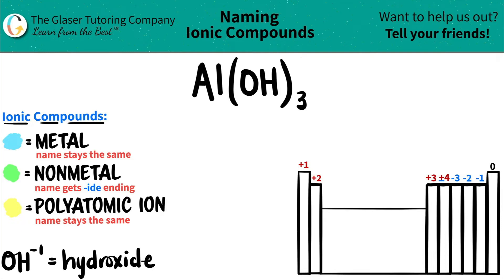Today we are going to be naming the ionic compound Al(OH)3. Now here's a trick guys. If you see that your compound has three or more different elements in it, you know you're dealing with at least one polyatomic ion.